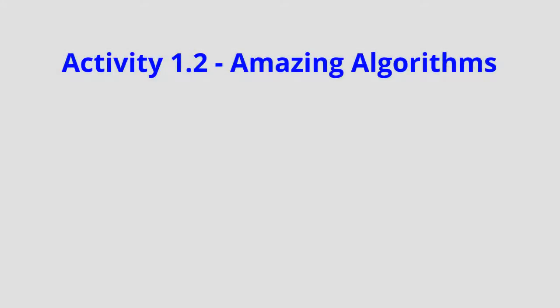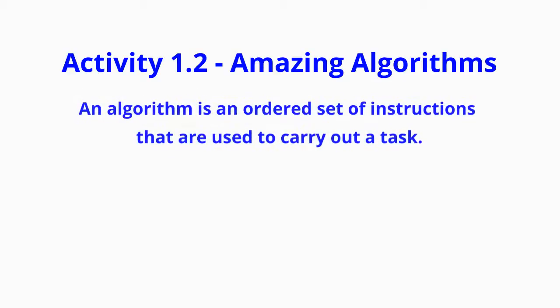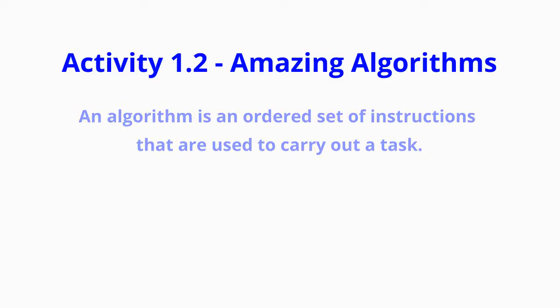Today we're going to take a look at activity 1.2: Amazing Algorithms. An algorithm is an ordered set of instructions that are used to carry out a specific task. An example of this may be something like brushing our teeth, where we have a step-by-step process that we use in order to carry out that task and achieve our desired outcome.